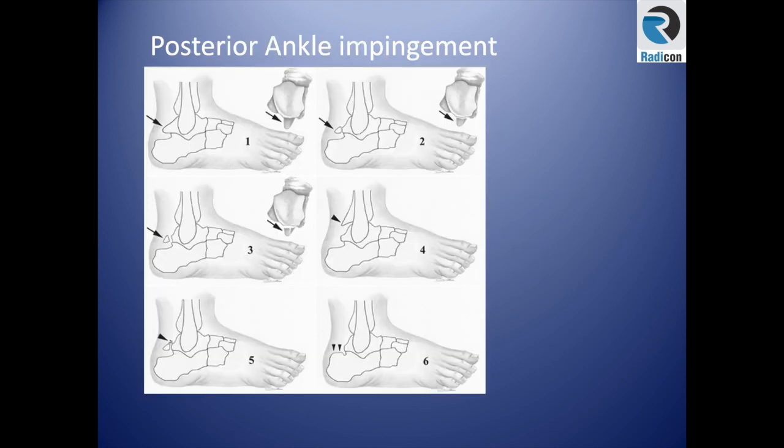There are multiple bony causes of posterior ankle impingement. These include a prominent os trigonum, a prominent posterior process of the talus, a separated os trigonum, or prominence of the posterior distal tibia.